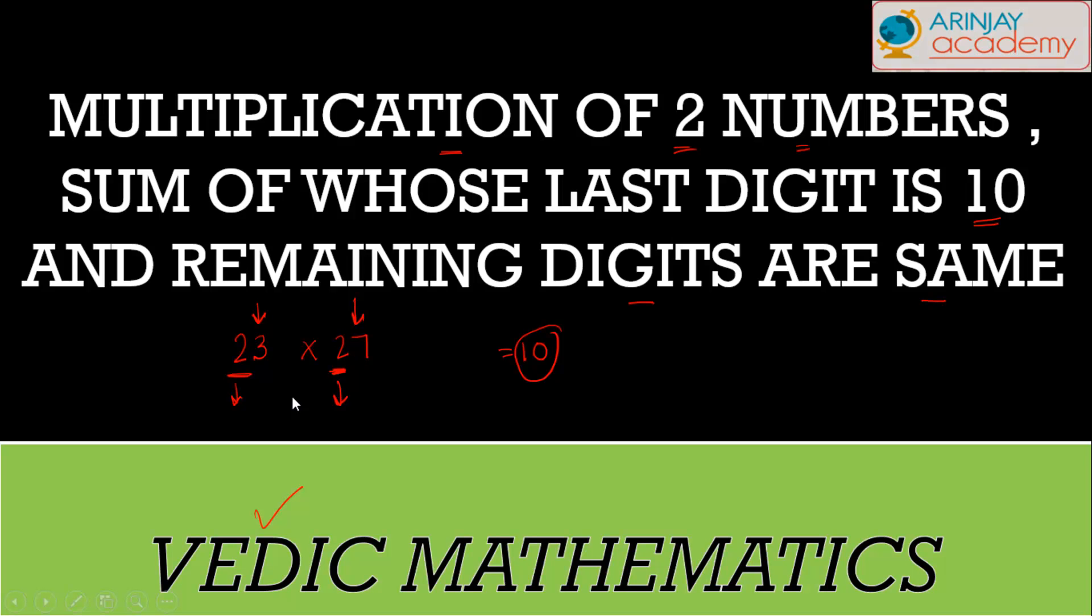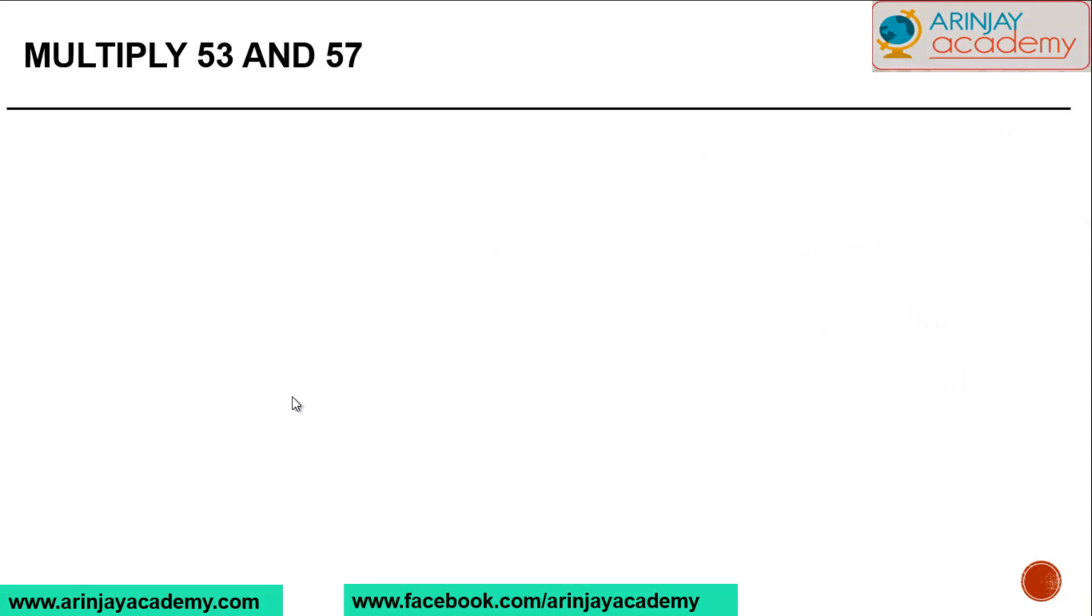Multiply 53 and 57. If you look at them, what is the sum of the last digit of these numbers? In 53 the last digit is 3, here it is 7, so 3 plus 7 equals 10. What are the remaining digits in these two numbers? In the first number the remaining digit is 5, in the second one also it is 5, which is the same. If these two properties apply, then we can very easily find out the multiple of these two numbers.